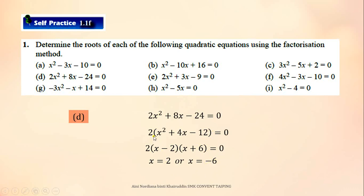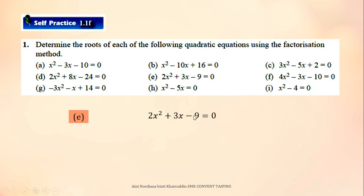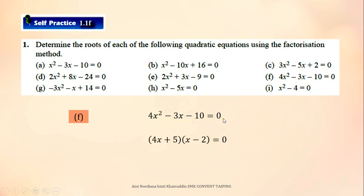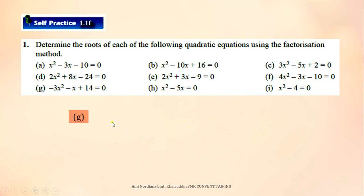Remember to do this step. For E, this is the quadratic equation; you factorize and the answer for X is 3 over 2 and negative 3. For F, the equation is X squared minus 3X minus 10 equals 0. Factorize it to get the answer.